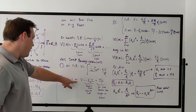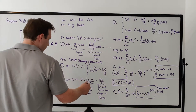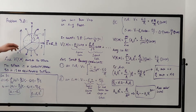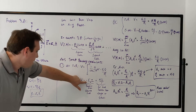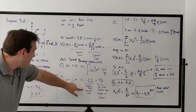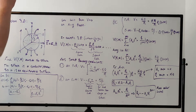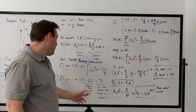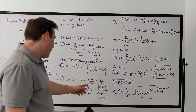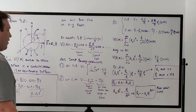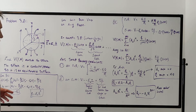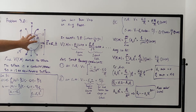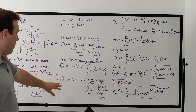The second boundary condition is that at infinity — or rather, at some point r very far from the sphere — we should still see the potential from the external field (−E₀z) plus the far-field potential from the charge on the sphere (kQ/r). The induced field contribution becomes negligible. So that's our second boundary condition.